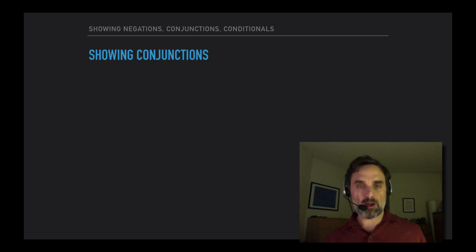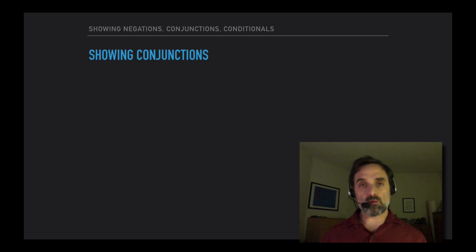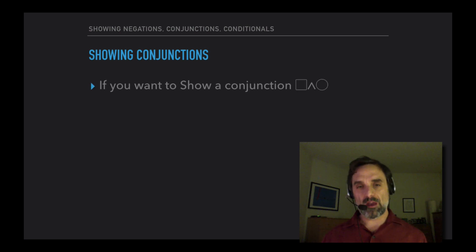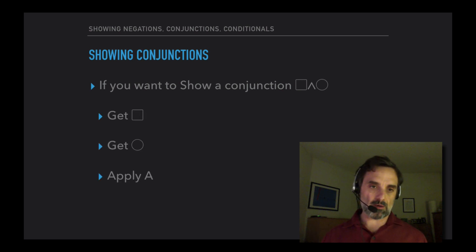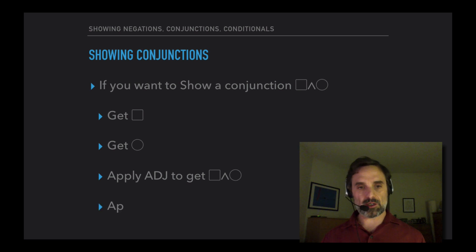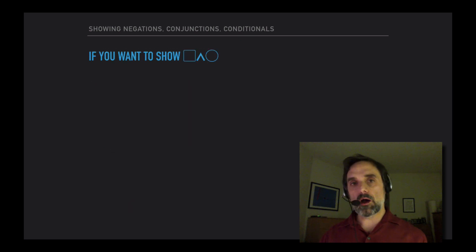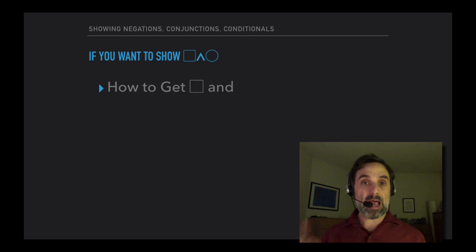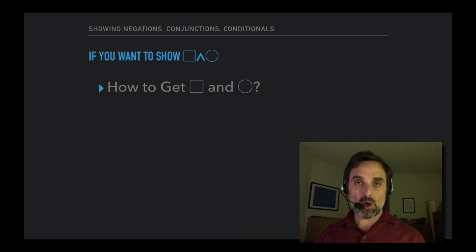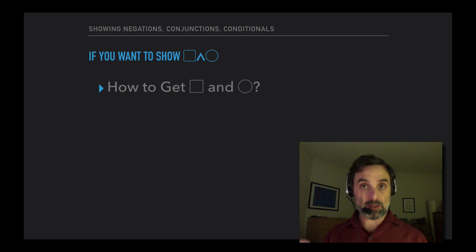In this video, I'm going to talk about strategies for showing conjunctions. As with showing conditionals and showing negations, there's nothing really novel here. If you want to show a conjunction — box and circle — then you get box, you get circle, you apply a join to get the conjunction, and you apply DD. But what we need to think about is how to get box and circle. Let's look at some derivations and a sub-derivation strategy relevant to doing that.